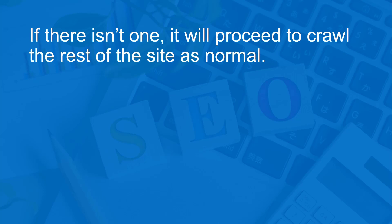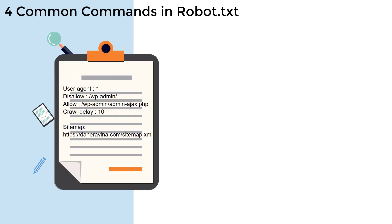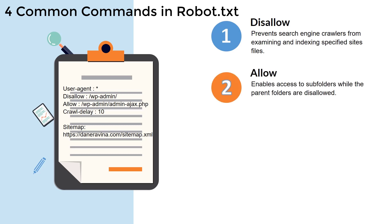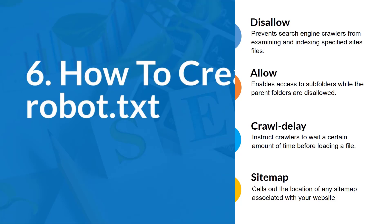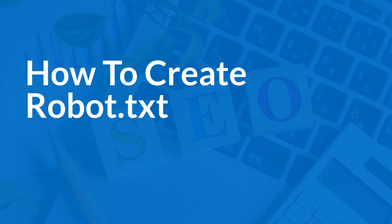The first thing a search engine crawler does when it reaches your site is look for a robots.txt file. If there isn't one, it will proceed to crawl the rest of the site normally. If it finds the file, it will look for commands within it. There are four common commands in robots.txt: Disallow — prevents crawlers from indexing specific files; Allow — enables access to subfolders when the parent folder is disallowed; Crawl-delay — instructs crawlers to wait before loading a file; and Sitemap — calls out the location of any sitemap associated with your website.